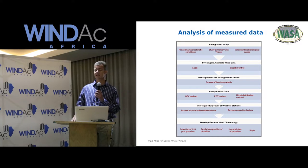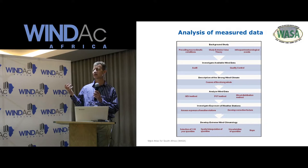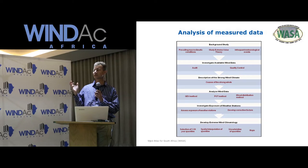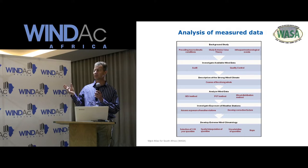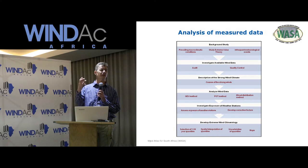We then investigated the available wind data. You have to do an audit and quality control of wind data because you are working with wind data prone to outliers, and sometimes there are instrument problems to address. Then you do a description of the strong wind climate, looking at the different causes because that determines what kind of statistical analysis to apply.